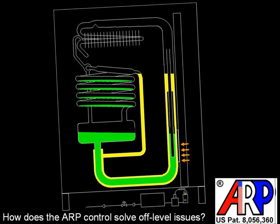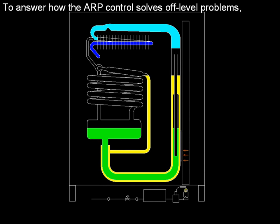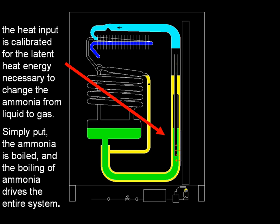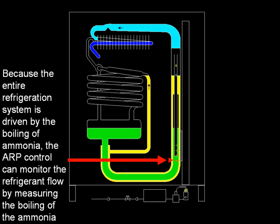How does the ARP control solve off-level issues? To answer how the ARP control solves off-level problems, the heat input is calibrated for the latent heat energy necessary to change the ammonia from liquid to gas. The ammonia is boiled and the boiling of ammonia drives the entire cycle. Because the entire refrigeration system is driven by the boiling of ammonia, the ARP control can monitor the refrigerant flow by measuring the boiling of the ammonia.